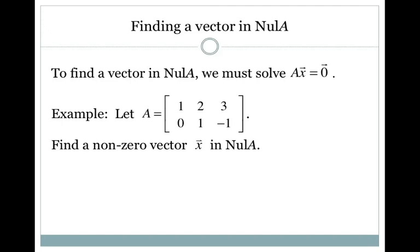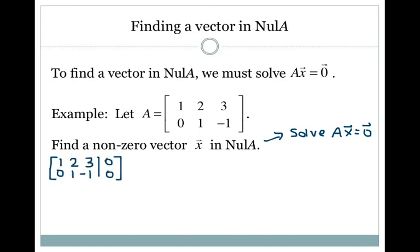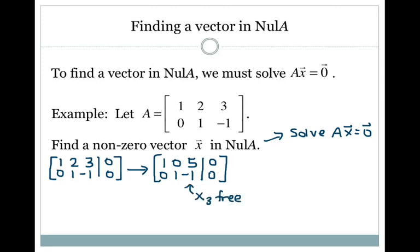For example, say we have matrix A equals 1, 2, 3, 0, 1, negative 1, and we're asked to find a non-zero vector X in the null space of A. I'm going to solve AX equals zero by setting up the augmented matrix and row reducing. I see that there's no pivot in the third column, so X3 is free.